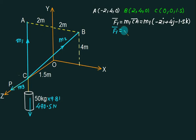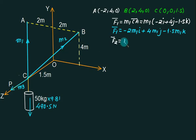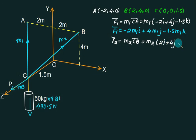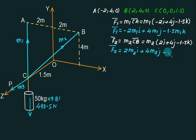Expanding F1: minus 2m1 i plus 4m1 j minus 1.5m1 k. Now for force F2, we assume m2 is directed from C to B. So F2 equals m2 times vector CB, which is B minus C, giving 2i plus 4j minus 1.5k. Expanding: 2m2 i plus 4m2 j minus 1.5m2 k.